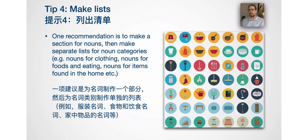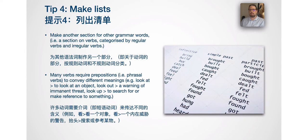Tip 4 is to make lists. One recommendation is to make a section for nouns, then a separate list for noun categories such as nouns for clothing, food and eating, items found in the home, and so on. Make another section for verbs, categorized by regular and irregular verbs. Many verbs require prepositions — phrasal verbs — to convey different meanings. For example, 'to look at' an object has a different meaning than 'look out,' a warning of imminent threat, and 'to look up' is typically used to search for or reference something in a dictionary.